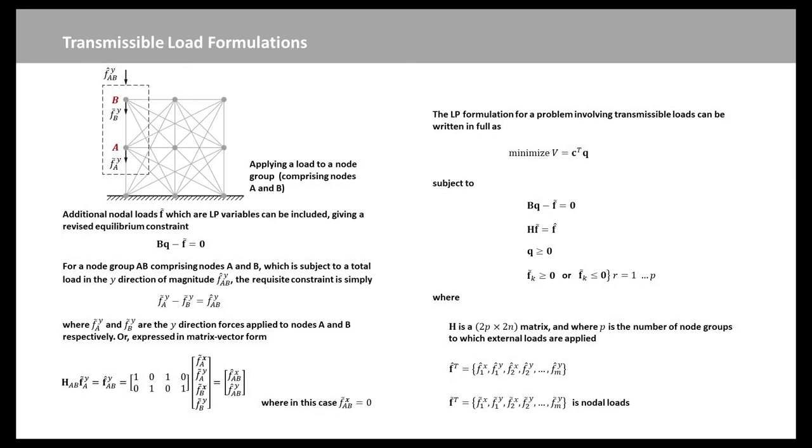Now we consider variation on the basic formulation in which further nodes can be included which are allocated to groups of nodes rather than to individual nodes. This figure shows a load shared by two nodes A and B in the ground structure. In this case, additional nodal loads F-wave line, which are linear programming variables, can be included. Given a revised equilibrium constraint, B times Q minus F-wave line equal to zero.